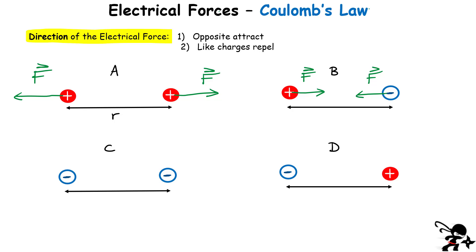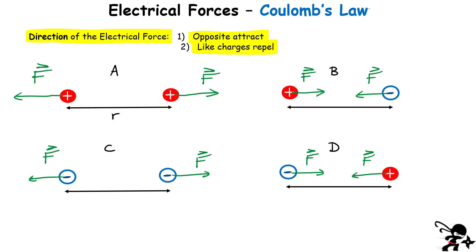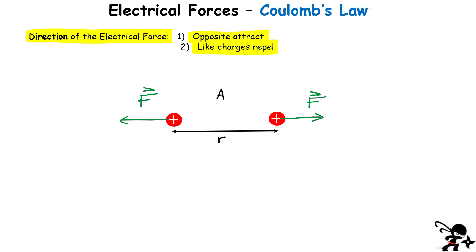The magnitude of those force vectors is exactly the same, but they point in opposite directions. In case C, two negative charges also repel each other, so the forces act outward in opposite directions. In case D, a negative and a positive charge attract, so the forces point toward each other. To determine direction, just remember: opposites attract and like charges repel — knowing the signs of the charges is enough to draw the force direction on each charge.